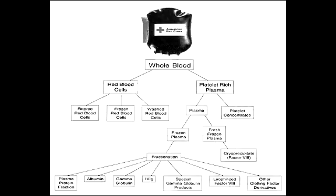What blood product would you administer for coagulation factor deficiencies involving fibrinogen and factor VIII? You could give cryoprecipitate. Cryoprecipitate contains fibrinogen, factor VIII, von Willebrand factor, and fibronectin.